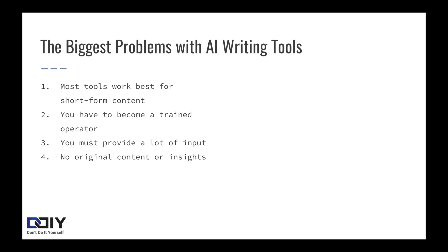Number four, there are no original contents or insights generated by AI. AI writing programs work by regurgitating information they find on the internet. The machines aren't smart enough to create new ideas, so there's not going to be a Skynet, at least not this year. In fact, if there is no existing content on a subject, an AI tool will have a hard time writing about it. So one thing we always recommend is that in order to create quality content, we really suggest having an editor add their own insights to any AI output. Number five, there's no fact checking. When a tool regurgitates the top content in search, misinformation will get repeated too. The solution is to build fact checking into your editorial process.